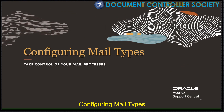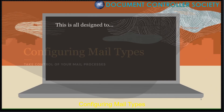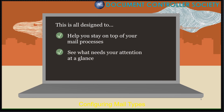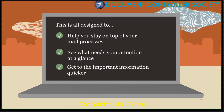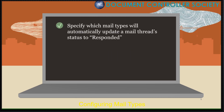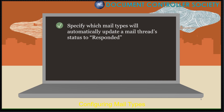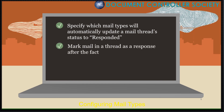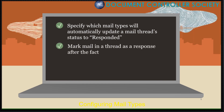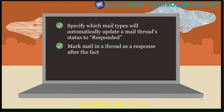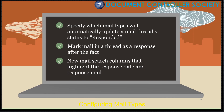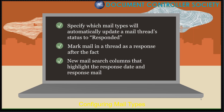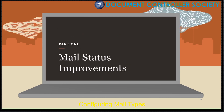We're excited to introduce some changes to mail. All of these changes are designed to help you stay on top of your mail processes, to see what needs your attention at a glance, and to get to the important information quicker. The first change gives project admins the ability to specify which mail types will automatically update a mail thread's status to Responded if a response is requested. Secondly, users with appropriate permissions can now mark mail in a thread as their response after the fact to update status. And finally, we've added new mail search columns that highlight the date a response was given and which mail was marked as the response. Let's run through these now, starting with the new mail status improvements.